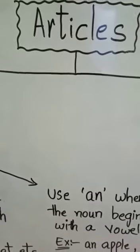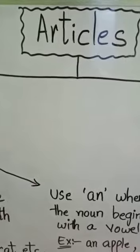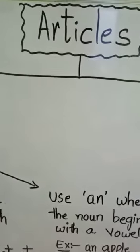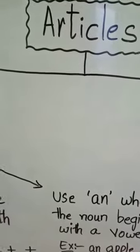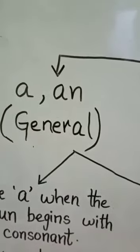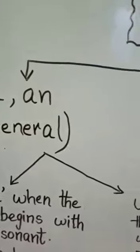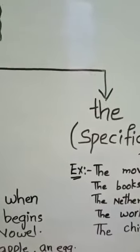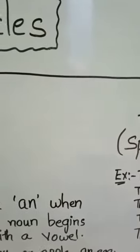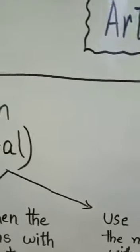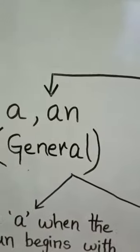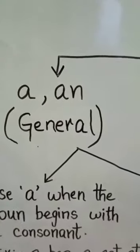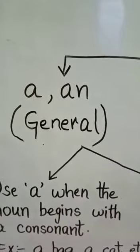So today we will learn articles. So what are articles here? English has two articles. That is A or an, and the other is the. So now let us see in detail when do we use A or an and when do we use the. So are you children ready? Alright, so let's get started.